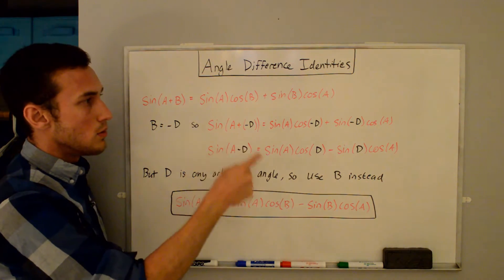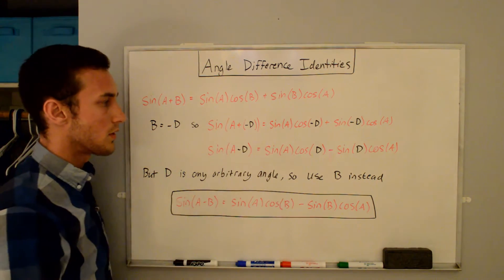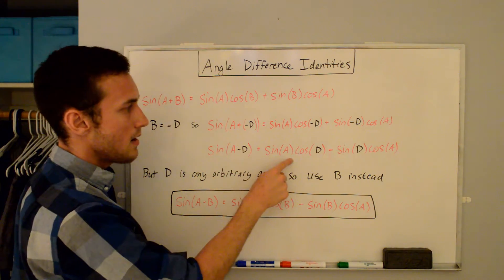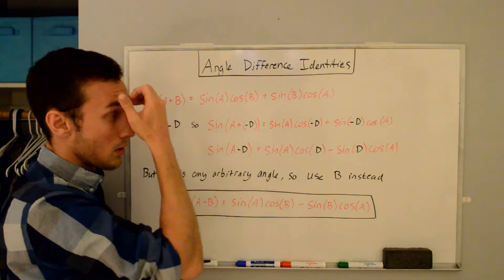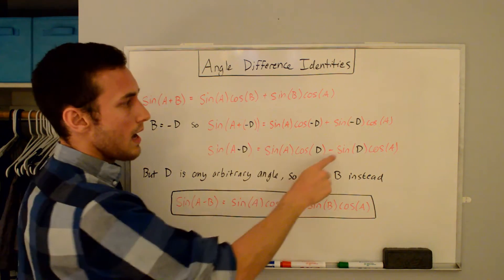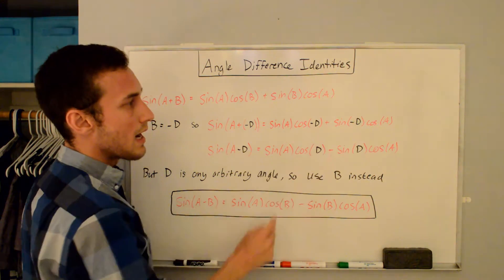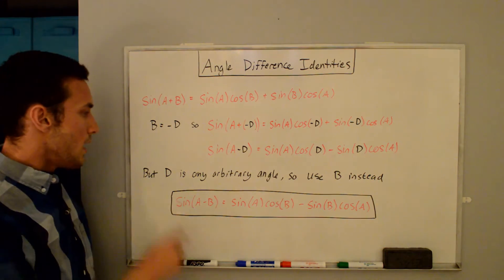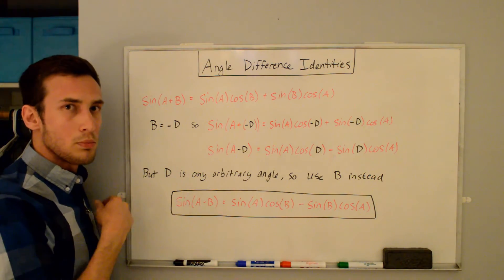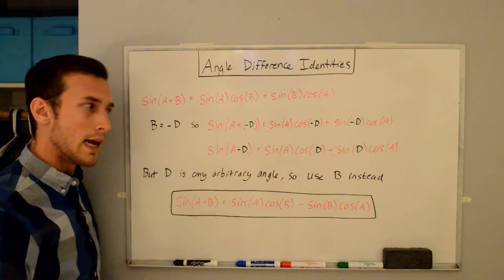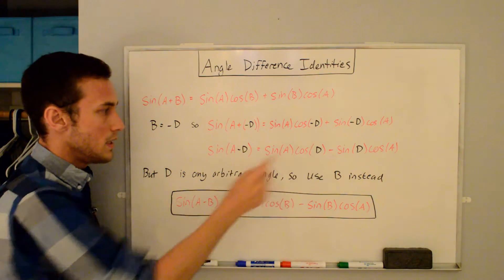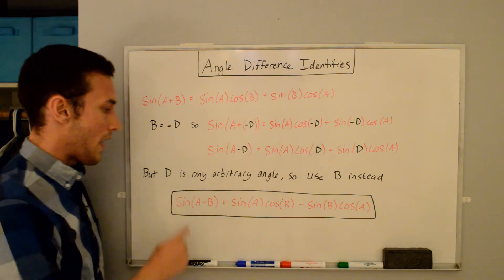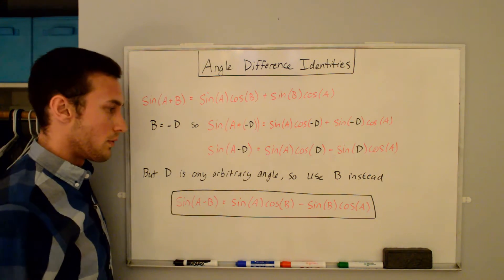Now I'll use the odd and even function properties. We have sine of a minus d equal to sine a times cosine d — because cosine is an even function, cosine of negative d equals cosine d. Then sine of negative d equals negative sine d, because sine is an odd function, giving us minus sine d cosine a. Since d is any arbitrary angle, we substitute b back in: sine of a minus b equals sine a cosine b minus sine b cosine a. That is the sine angle difference formula.